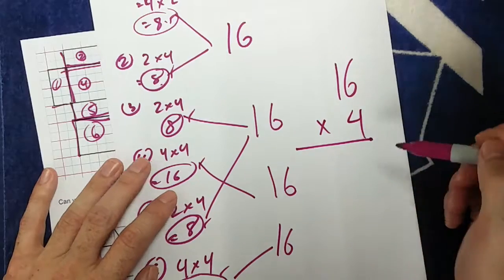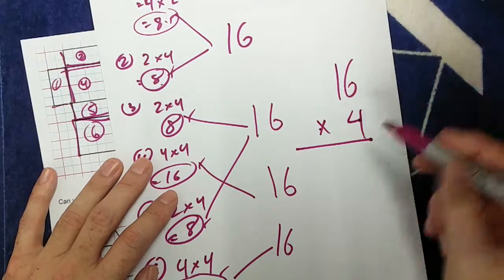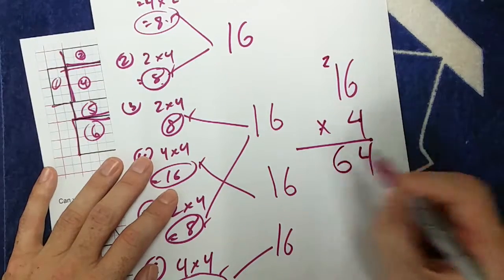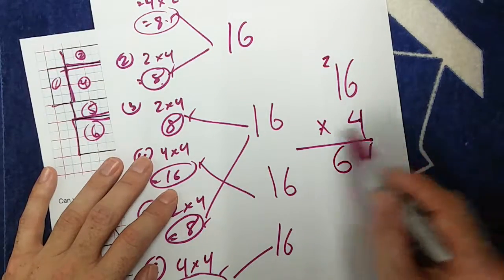I can do the long way. Long way is, okay, 4 times 6 is 24, and then 4 times 1 is 4 plus 2 is 6. So there's my answer, 64.